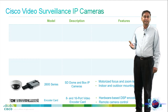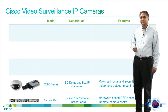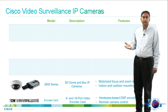The 2600 series is our standard definition IP camera line. There are box, indoor dome and outdoor dome variants in this line. These cameras have excellent wide dynamic range which allows you to use them in varying lighting conditions, and the dome cameras have a motorized focus and zoom lens which allows for easy installation.